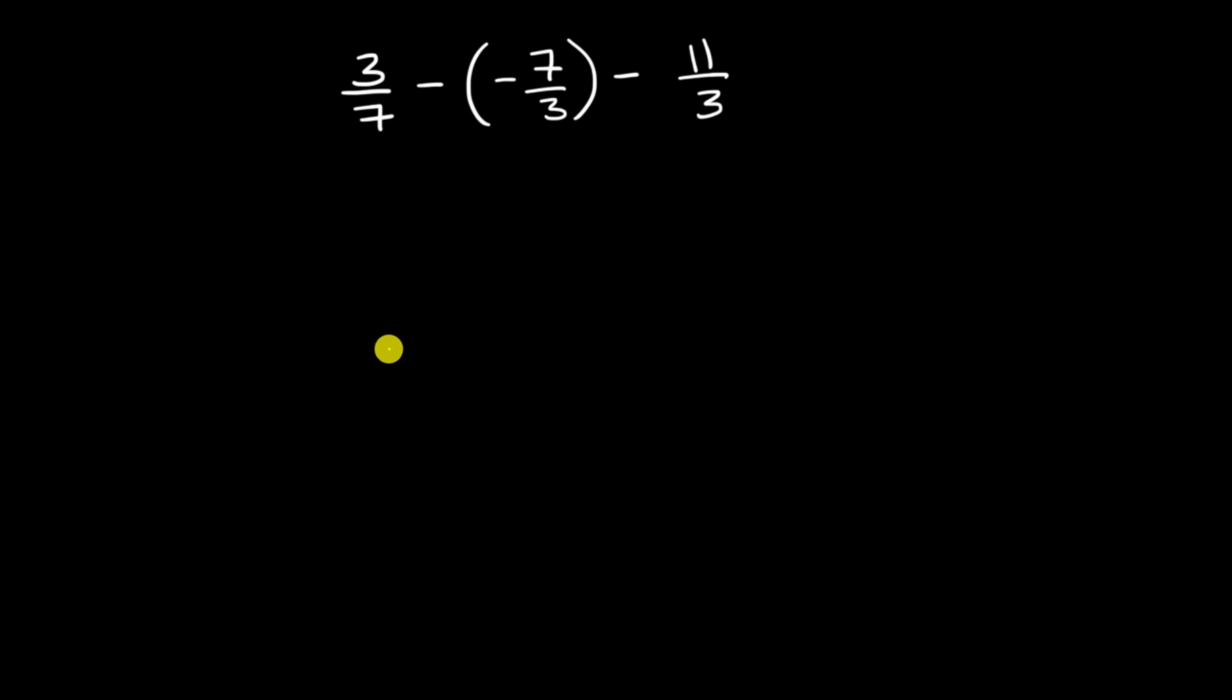All right, now let's work on this together. You might be tempted to deal with the negative 7/3 and the 11/3 first because they already have a common denominator. But you have to realize that with subtraction, you can't use the associative property. It's not this, for example, which is what you would typically do first, is not the same thing as this right over here. So you have to be very careful.